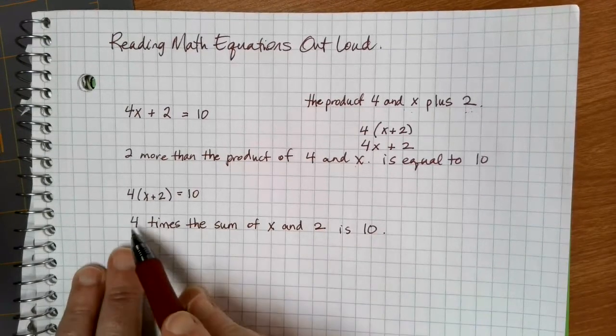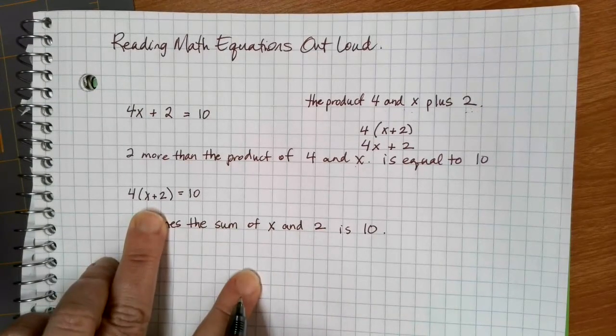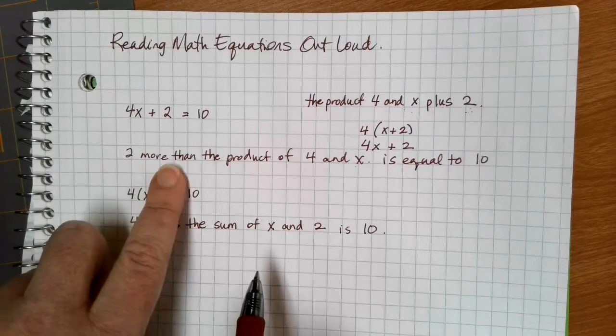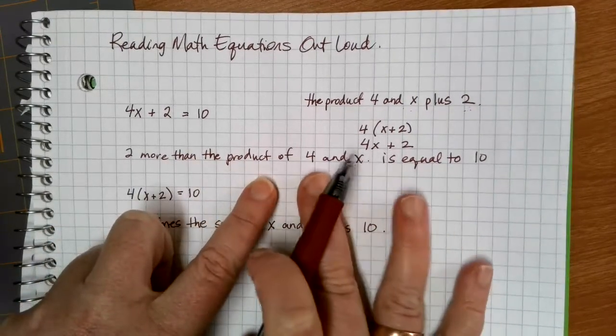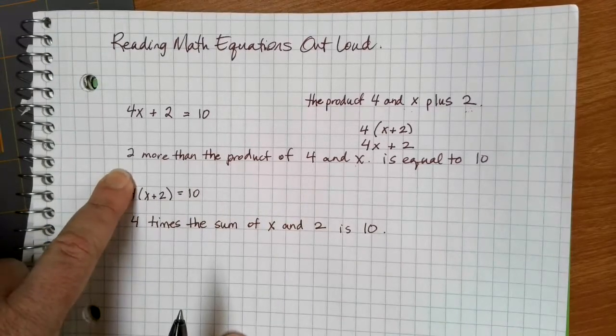So in this case, I'm multiplying 4 times the answer to the addition problem, meaning I need to do the addition problem first. Here, I'm doing 2 plus the product of these two. So I'm going to do the multiplication first and then multiply by 2.